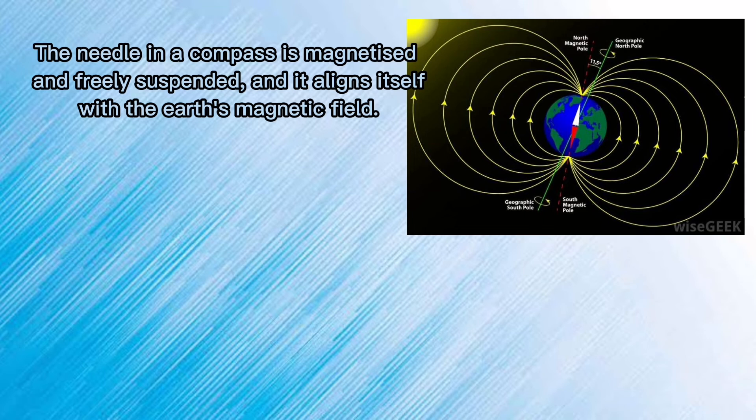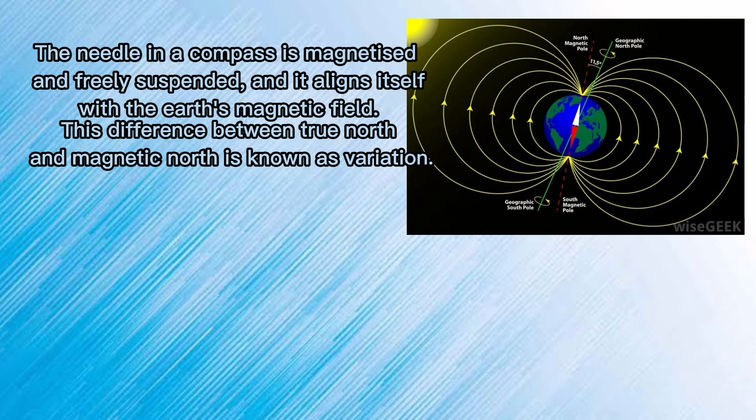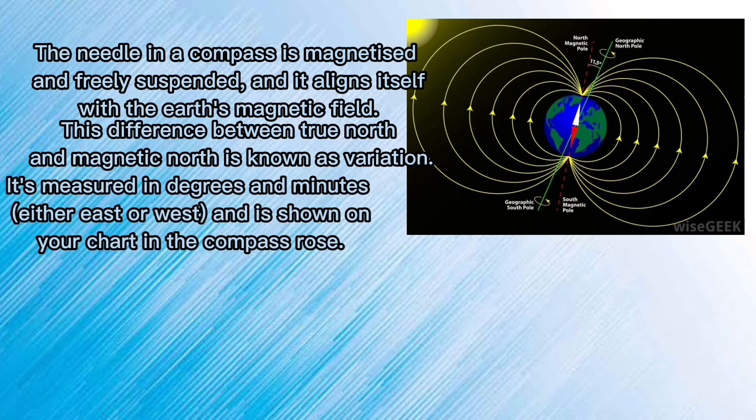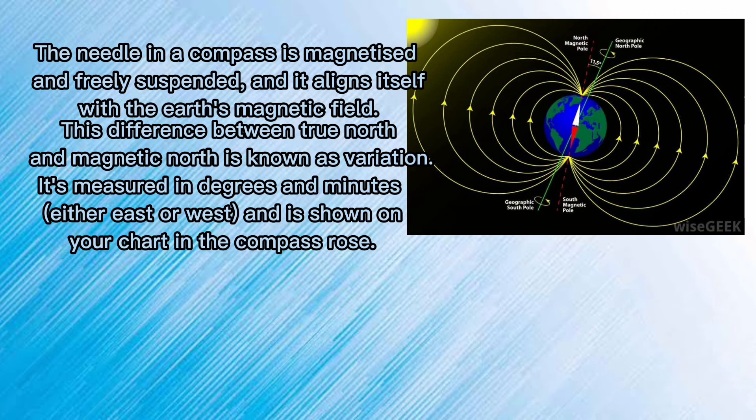The difference between true north and magnetic north is known as variation. It's measured in degrees and minutes, and it's shown on your chart in the compass rose.